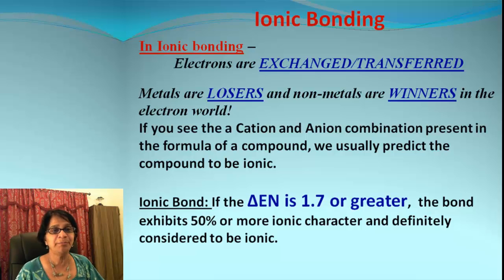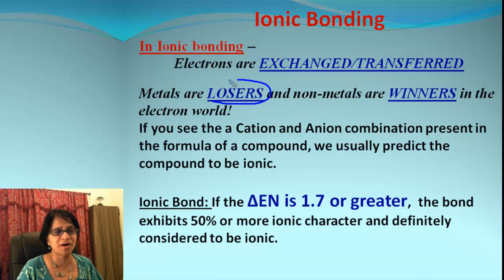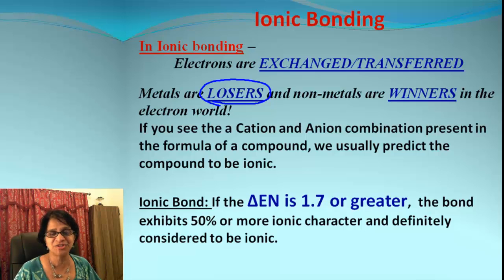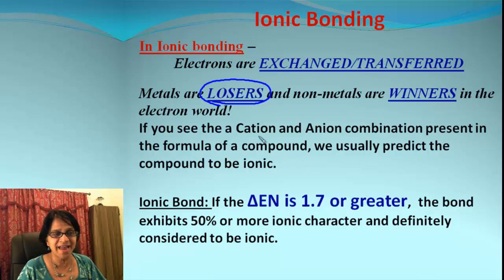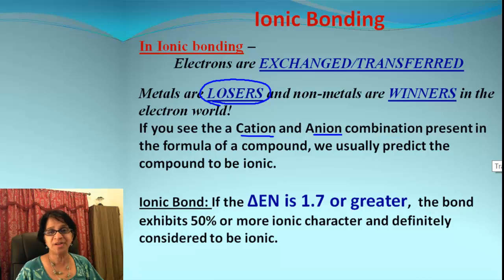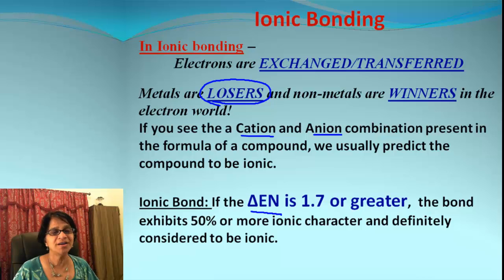We also learned about ionic bonding. An ionic bond is formed between a metal and a non-metal — or simply between a cation and an anion. Metals always lose electrons, so we call them losers, and non-metals gain electrons, making them winners. So there is a cation and an anion in an ionic compound. That is one trick to identify ionic compounds. The second trick is the electronegativity difference: if delta En is 1.7 or greater, the bond is considered ionic.